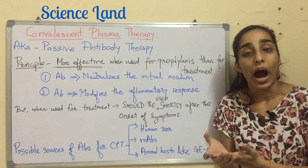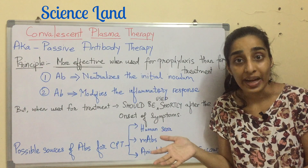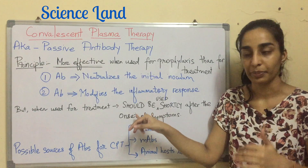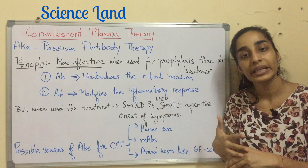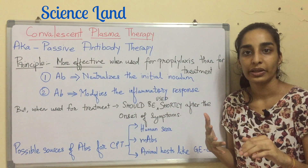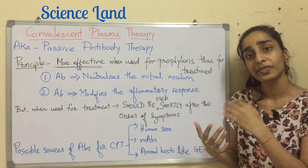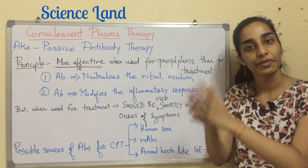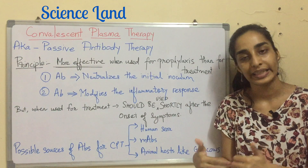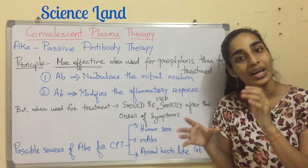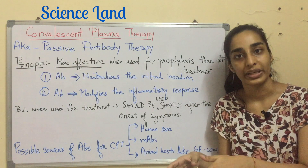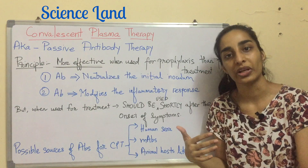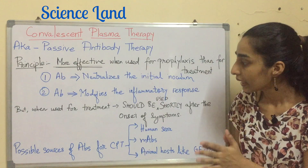When CPT is used for treatment, how do we make it effective? The convalescent plasma therapy should be used immediately — no waiting period after you see the onset of symptoms. If you have a confirmed COVID-19 case, just give the antibody right away; otherwise the virus titer will keep on increasing.